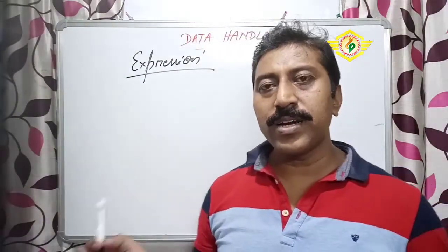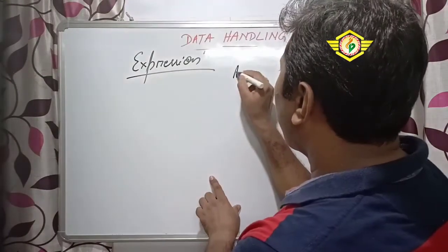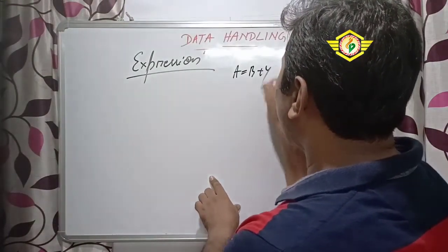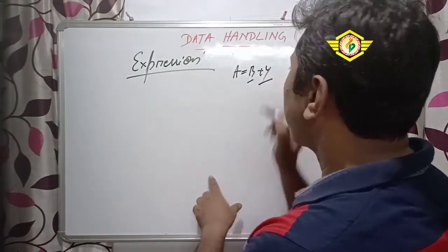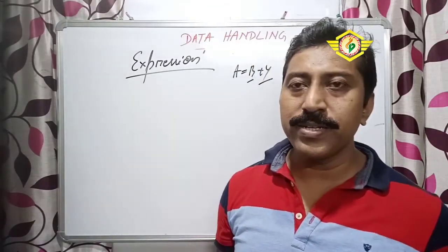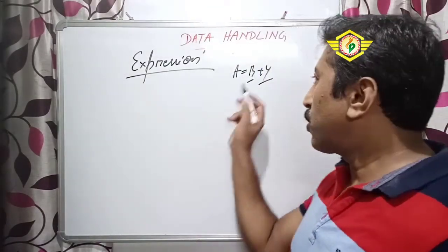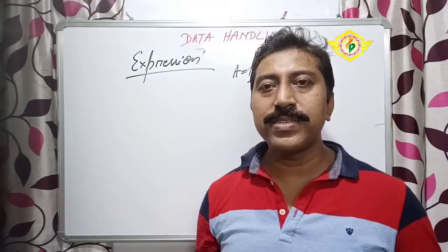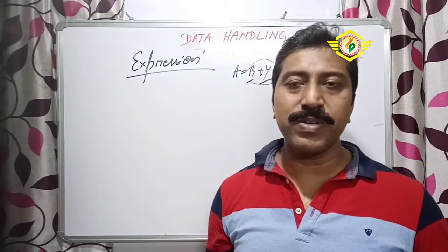Expressions means combinations of operators and operands. I am taking one example - suppose A equal to B plus 4. So B is an operand, 4 is also an operand and plus is the operator. The total we are finding, that is called A - A we can say it is an expression.